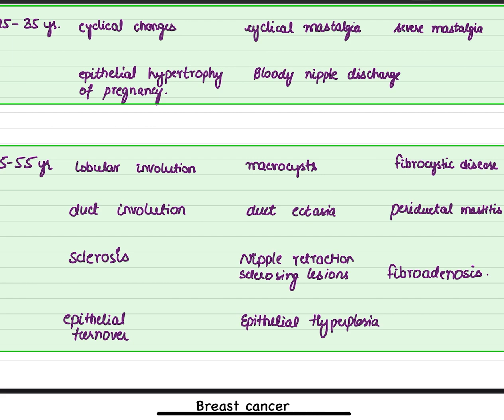Let's move on to the last stage — the stage of involution. In this stage four things occur: lobular involution, ductal involution, sclerosis, and epithelial turnover.